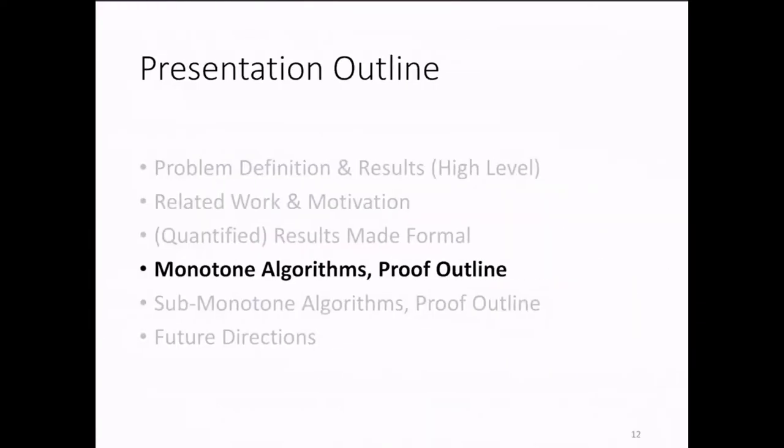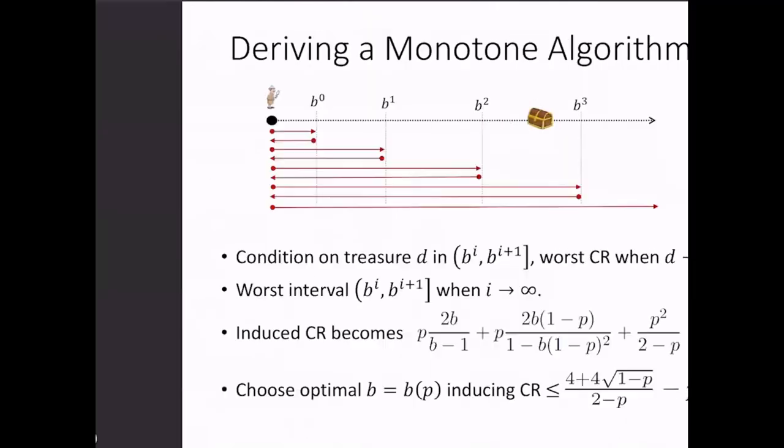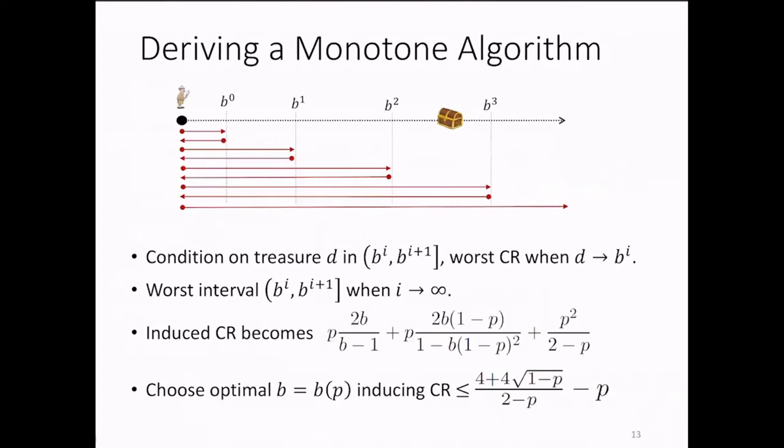Next, I will just give you a minor flavor of how the results were obtained, and I will start with the optimal result we have for monotone algorithms. Our algorithm is determined by a sequence of turning points that increase geometrically. We fix a constant b, which is allowed to depend on p, so the turning points are b to the power of 0, b to the power of 1, b to the power of 2, and so on.